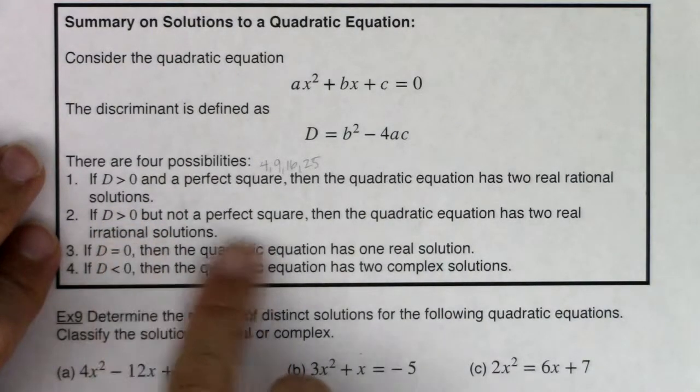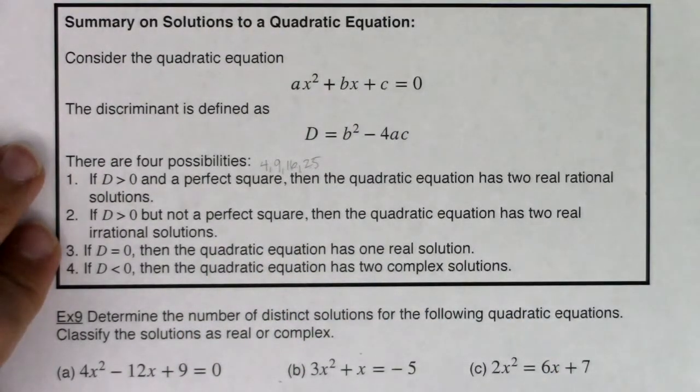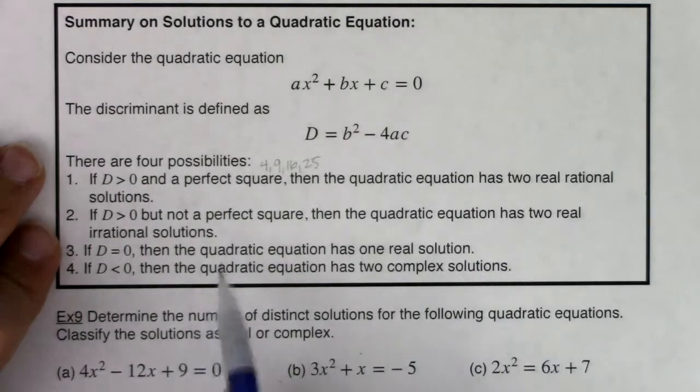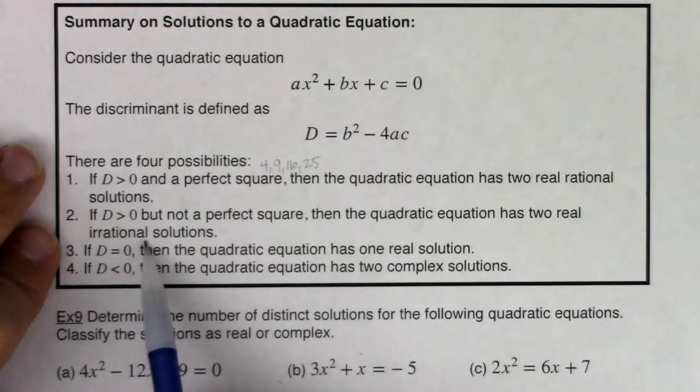Now if it's positive but not a perfect square, so any number other than those perfect squares, which is most of the time, then the quadratic equation has two real irrational solutions.